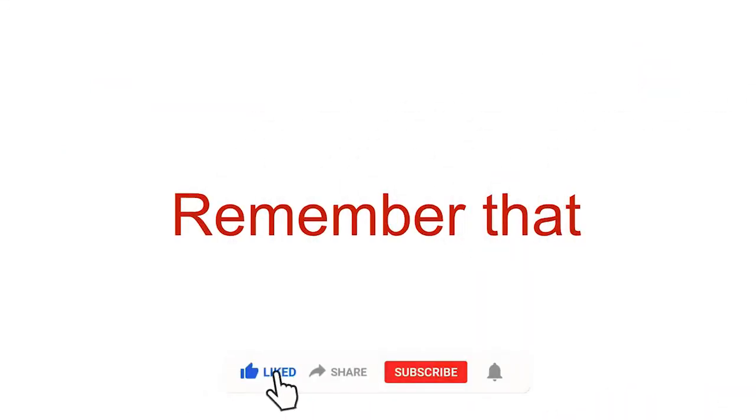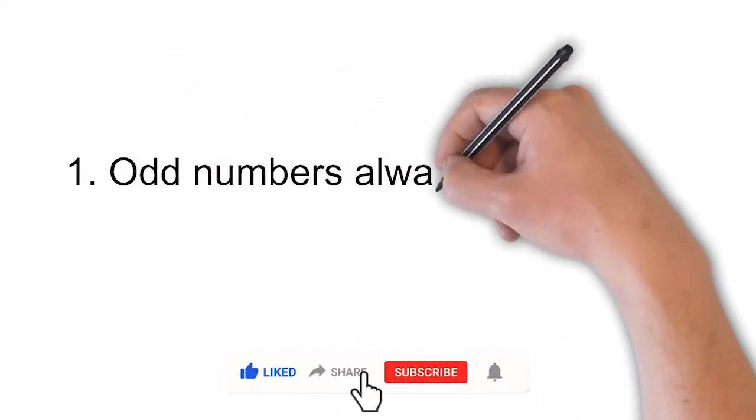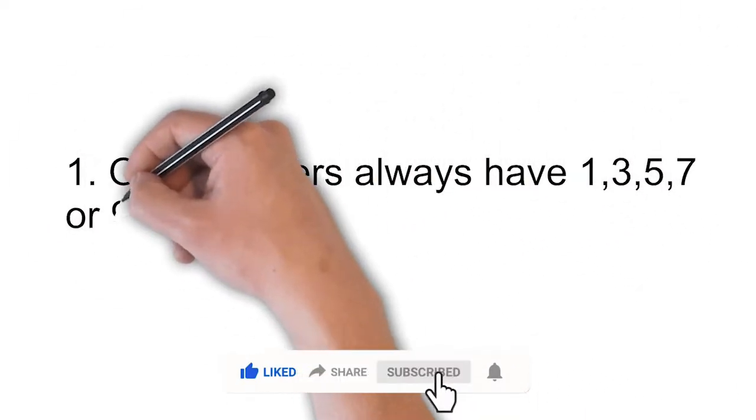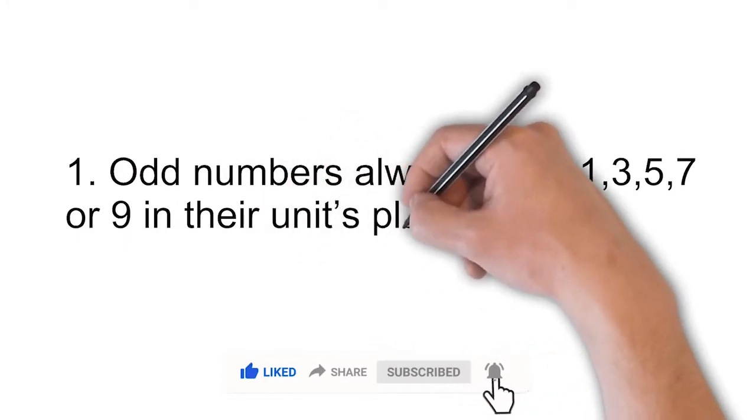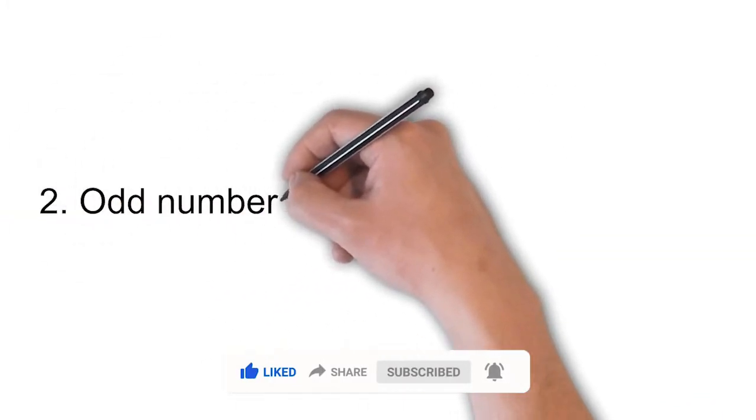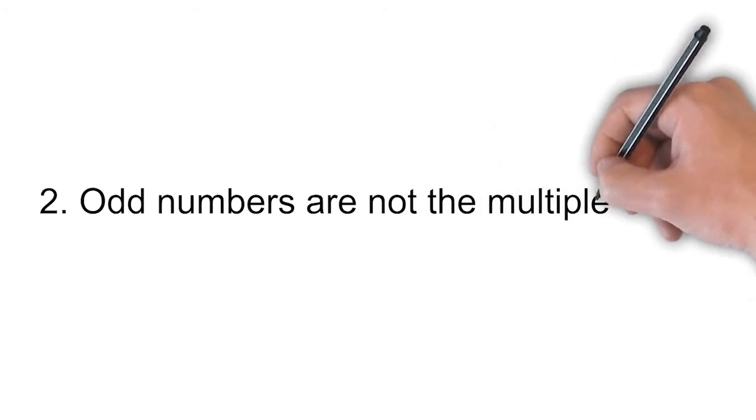Remember that odd numbers always have 1, 3, 5, 7 or 9 in their units place. Odd numbers are not the multiples of 2.